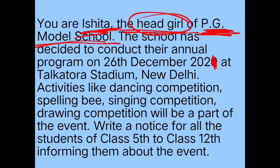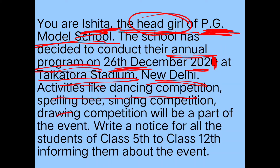The heading of this notice is 'Annual Program.' When is it? On 26th December 2021. Where? Tal Katora Stadium, New Delhi. What are the activities? Dancing competition, spelling bee competition, singing competition, and drawing competition. These are the important details to collect from the question. It is very important to collect this information before you write your notice. Underline all these things in the question so it will be easy to write the notice.